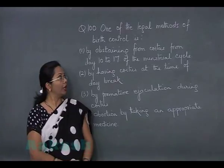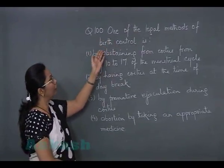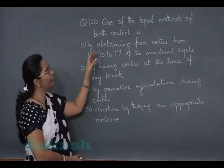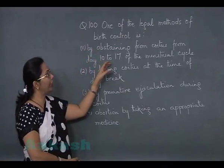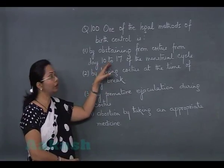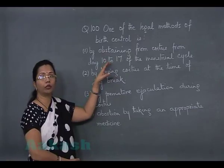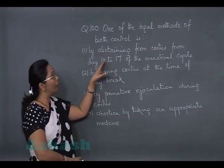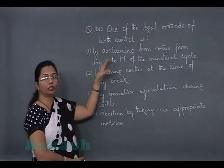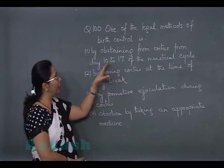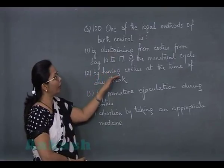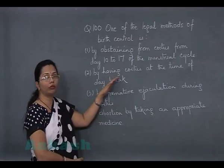Question 100: one of the legal methods of birth control. The first option says abstaining from coitus from day 10 to 17 of the menstrual cycle — this is periodic abstinence, a natural method of birth control. During these days the female is highly fertile and chances of conception are great, but this has nothing to do with legality.